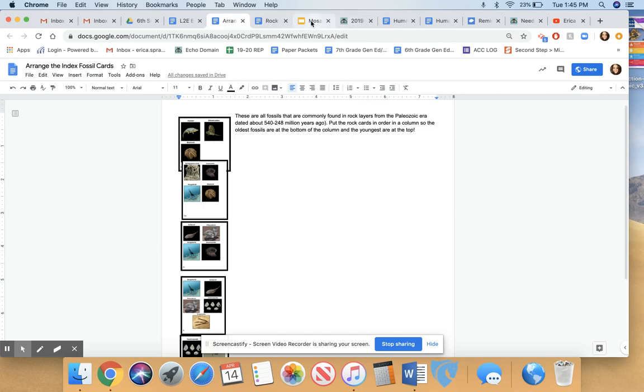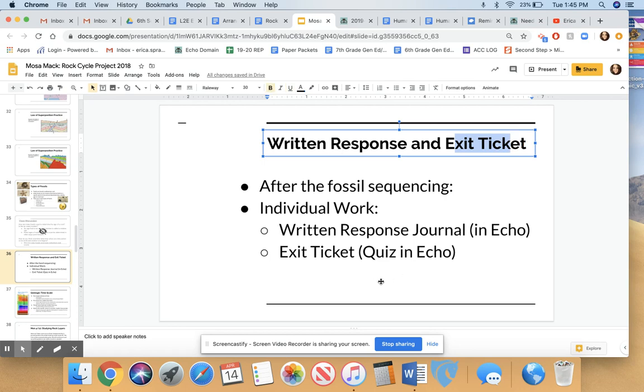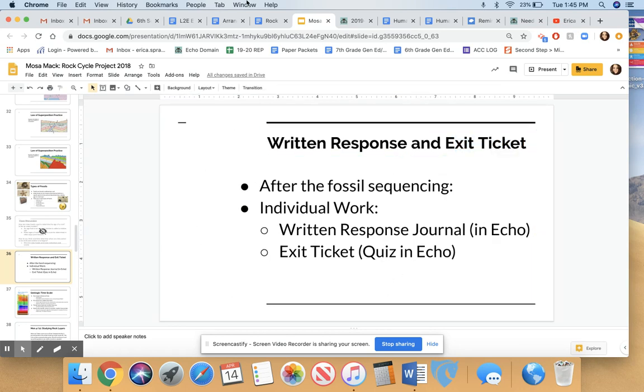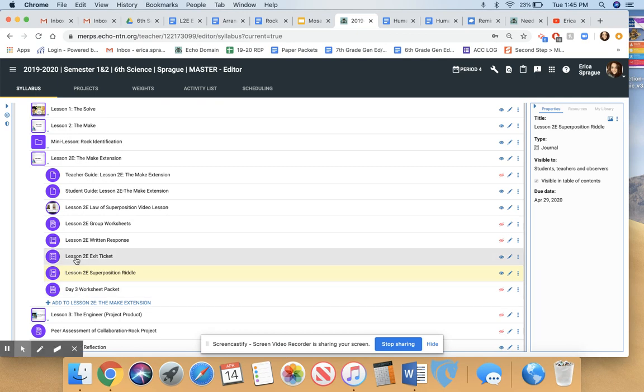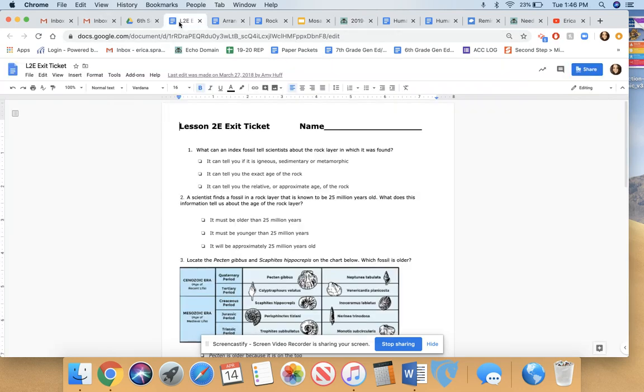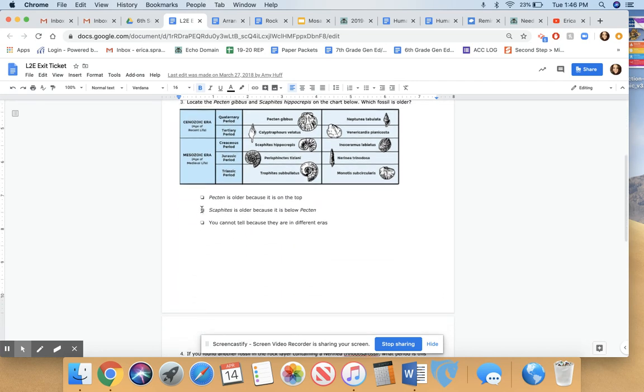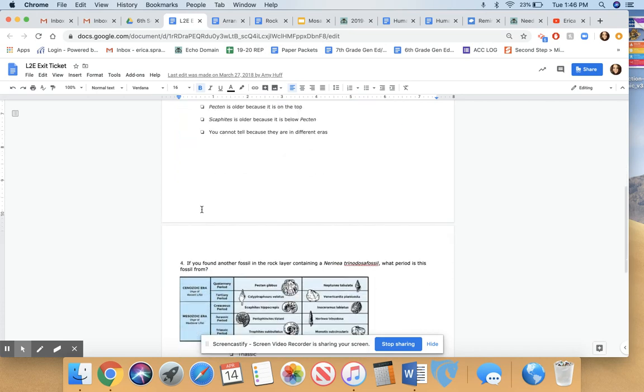So, your job today, after having gone through this activity, is to do the exit ticket in Echo. We're not going to do the written response this year. And I'm going to show you where it's at. So, this says, Lesson 2E, Exit Ticket. And this is an online quiz. And you actually have the ability to restart it and retry it as many times as you want to get the best score possible. So, the end of today's lesson is for you to do the exit ticket. And I can give you a little preview of it. It looks kind of like this. You're going to be asked to investigate some rock layers with some index fossils in it.